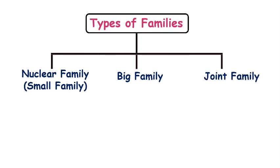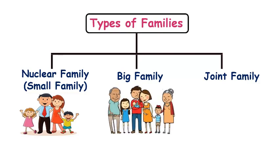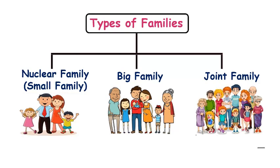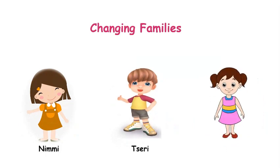Nuclear family is also known as small family and it consists of two parents and one or two children. Big family consists of two parents, their children, and their grandparents. Joint family consists of two parents, their children, their uncle and aunt, and grandparents. This chapter tells us about changing families through the stories of Nimmi, Sering, and Nazli.